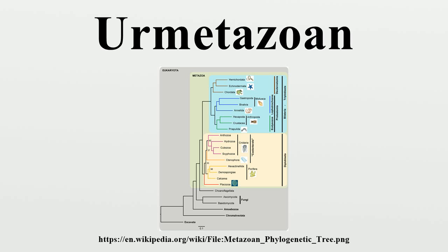Animals are considered by biologists to have evolved from a flagellated eukaryote. Their closest known living relatives are the choanoflagellates, collared flagellates that have a morphology similar to the choanocytes of certain sponges. Molecular studies place animals in a supergroup called the opisthokonts, which also include the choanoflagellates, fungi, and a few small parasitic protists.